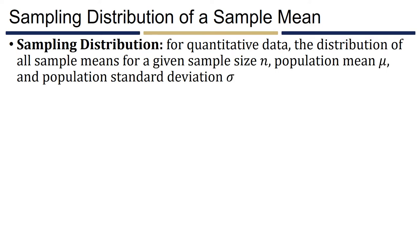Sampling distributions of the sample proportion gave us an idea of how sample proportions tend to be distributed given a certain sample size. Sampling distributions for a sample mean work similarly. Whenever we have quantitative data, a sampling distribution gives us the distribution of all sample means for a particular sample size n, a population mean μ, and a population standard deviation σ.